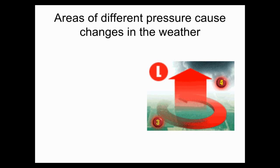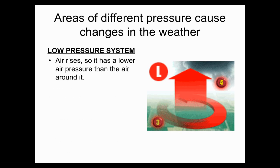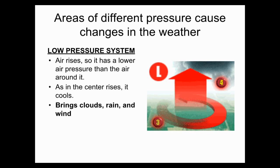Areas of different pressure also cause weather changes — that's a low pressure system. During a low pressure system, the air rises and has lower air pressure than the surrounding air. As the air in the center rises, it starts to cool, and this type of system brings clouds, rain, and wind.